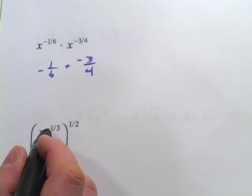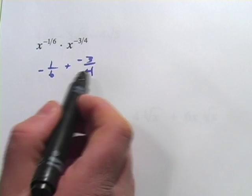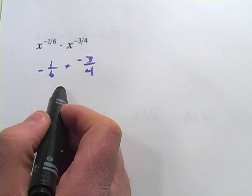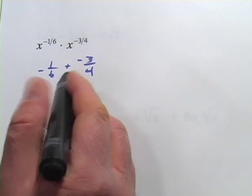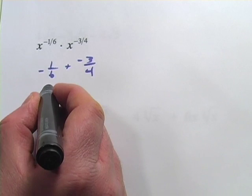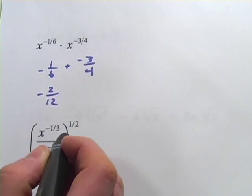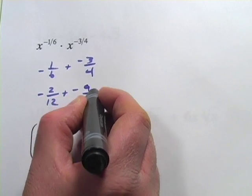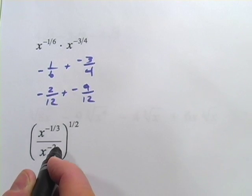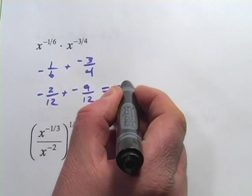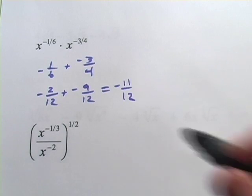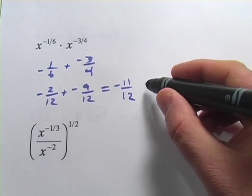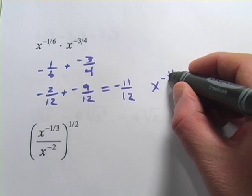This comes down to a problem in adding fractions, and you'll remember that we have to have like denominators in order to do that. So I'm going to convert these to twelfths. We'll multiply the first one by two over two, so negative one-sixth is the same as negative two-twelfths. And negative three-fourths multiplied by three over three gives negative nine-twelfths. When we add those together, we get negative eleven-twelfths — so x to the negative one-sixth times x to the negative three-fourths is x to the negative eleven-twelfths.